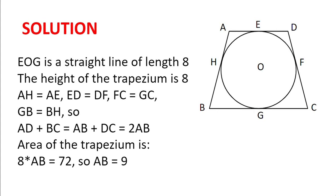So 8 multiplied by AB is 72, because that's what we're given in the question, and so AB equals 9.